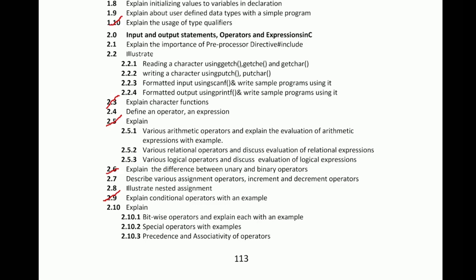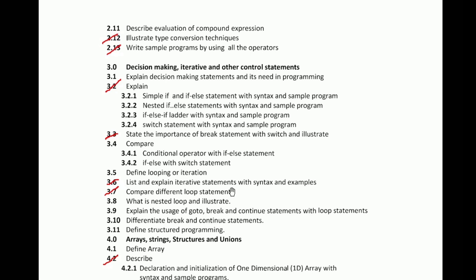In this unit, one important question is C expressions. A C expression evaluates a value using operator precedence, and that method is very important. Also important are scanf and printf, getchar and putchar, and character functions. You need to know at least two character functions. Type conversion techniques are also important in this unit. If you have an arithmetic operator, relational operator, or any expression, you may need to write a program using them.